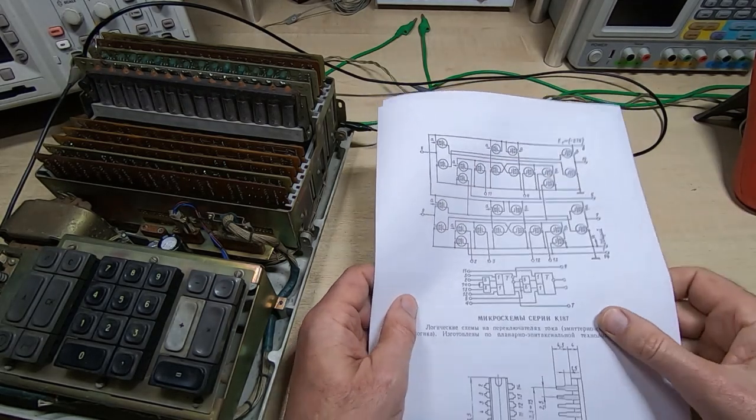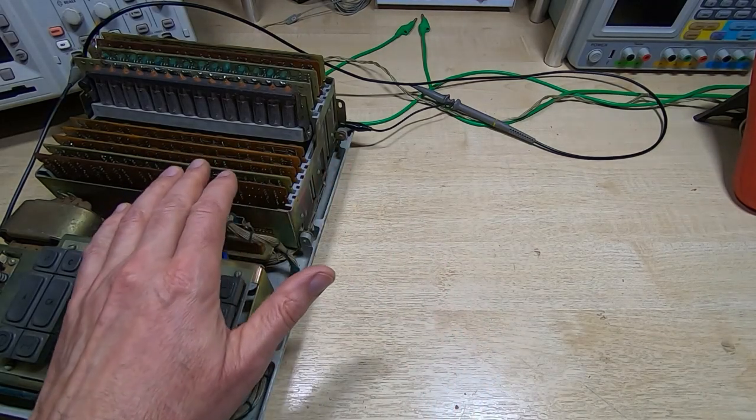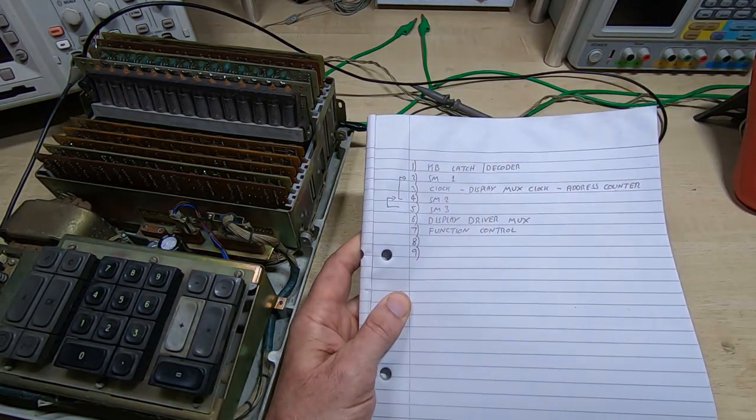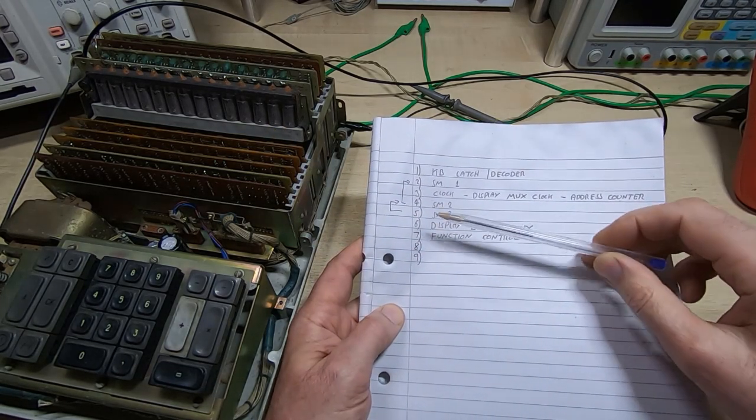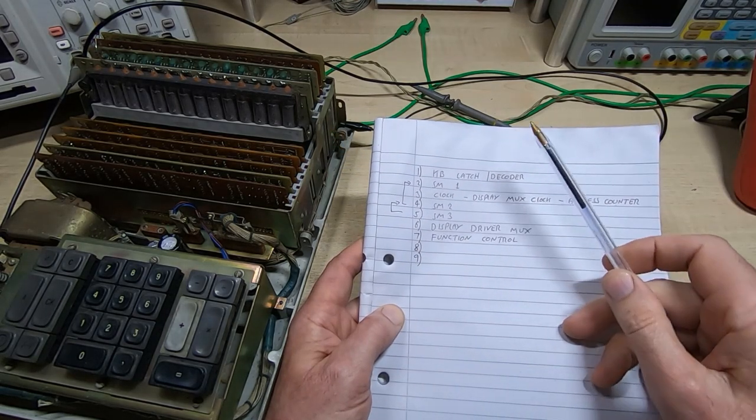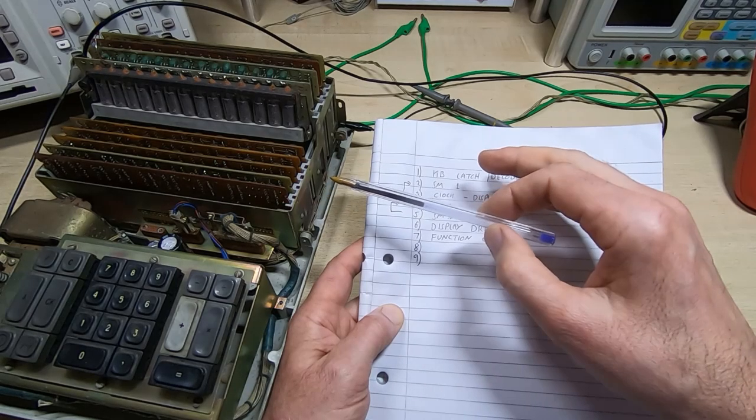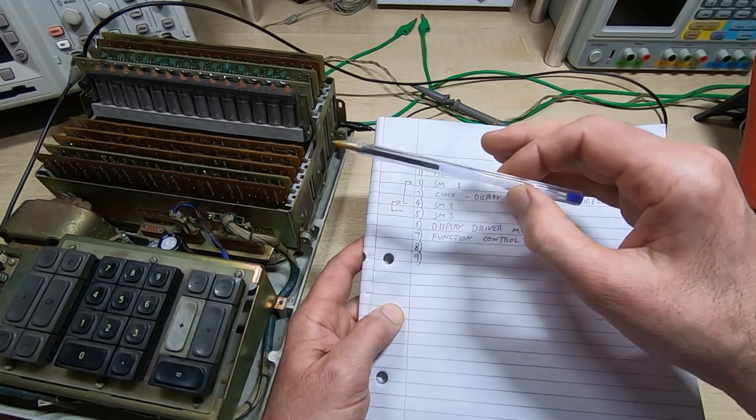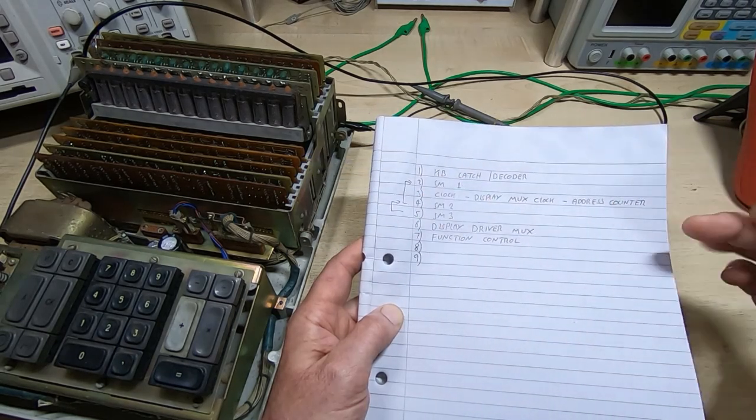I'd started going through trying to figure out what each board was and I started at the keyboard. I got as far as this, so this took me about two hours using a combination of the scope and the multimeter. As I said with the DTL calculator, the blocks of fixed blocks of schematic or circuitry, the functional blocks within something like this all tend to be fairly fixed.